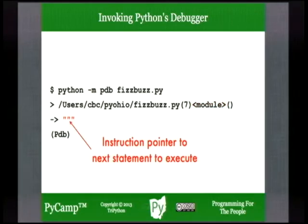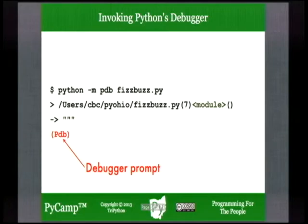You see what's called an instruction pointer to the next statement to execute. We'll step through one at a time — the debugger will show at all times the next statement to be executed. Finally, you don't see a Python prompt; you see a Python debugger prompt — PDB in parentheses — simply waiting for you to issue a debugger command.